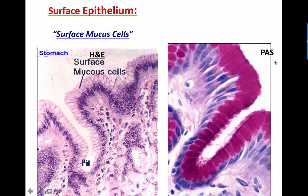When stained with PAS (periodic acid-Schiff), which stains mucopolysaccharides, the apical part of the surface mucus cells stains magenta red, since mucus is a glycoprotein. As studied in first-year cytology, PAS stains glycogen and glycoproteins with this magenta red color. The cell is very tall with a basal oval nucleus, and almost the entire cell is filled with this mucus collection.